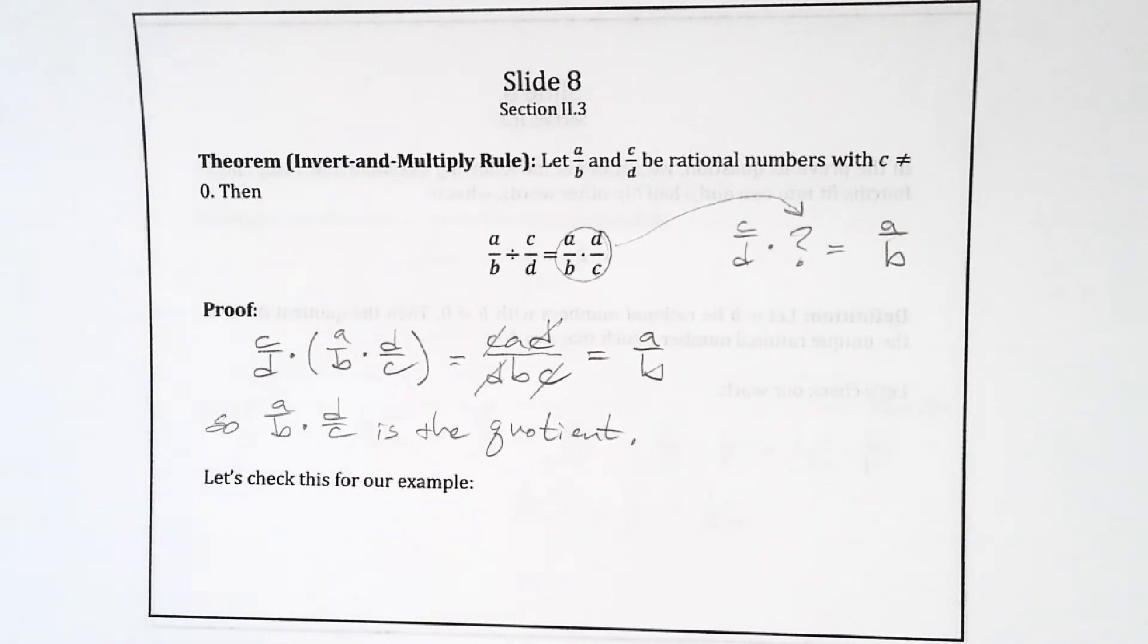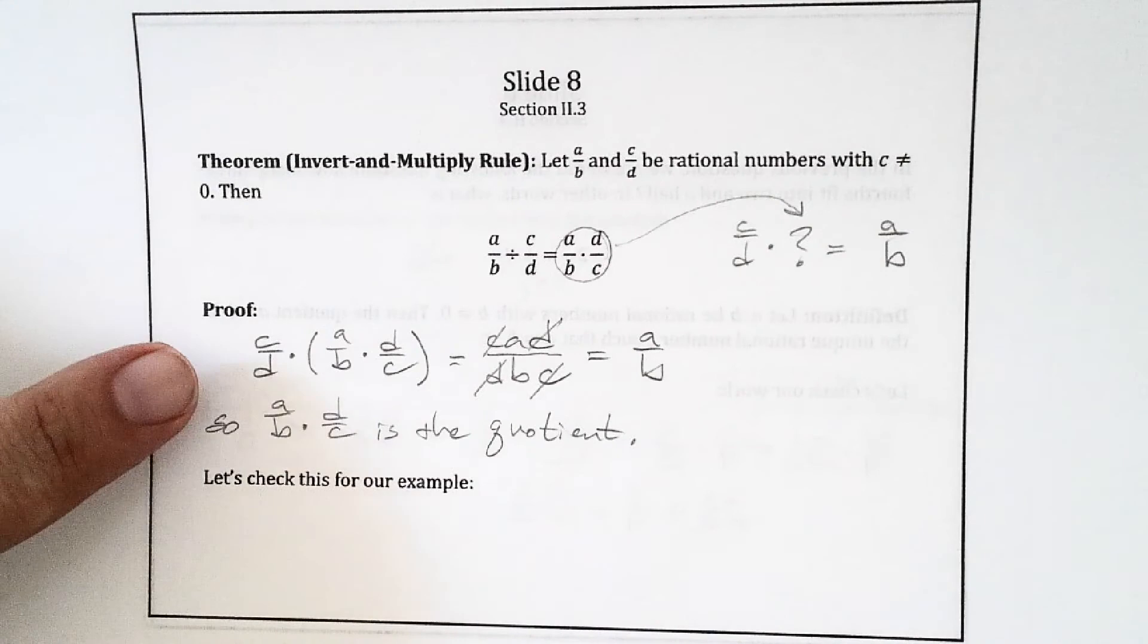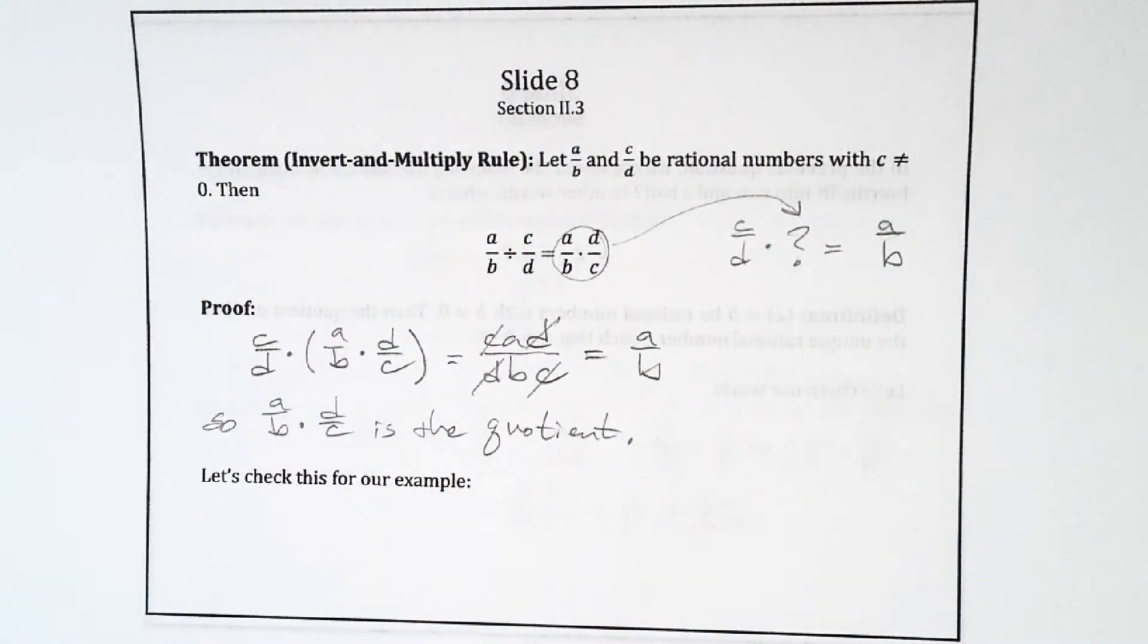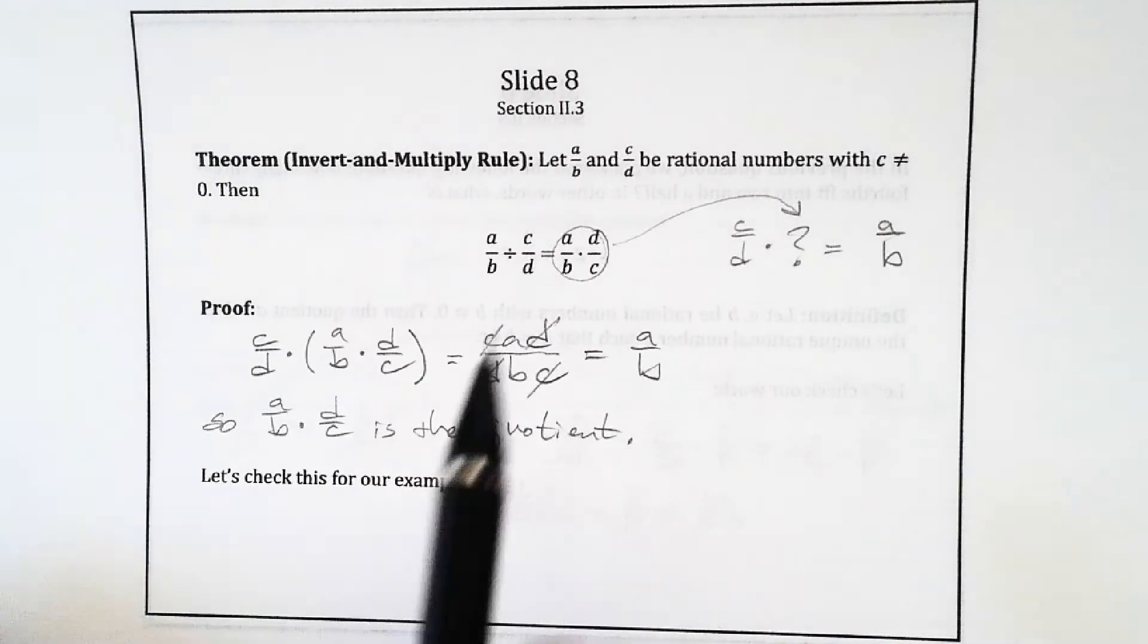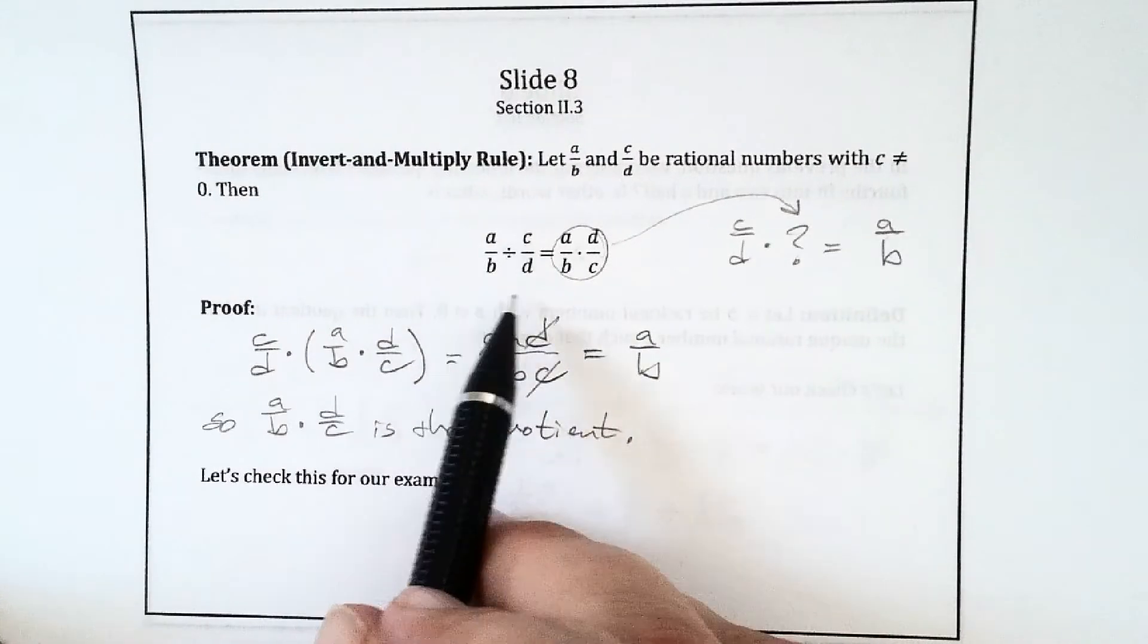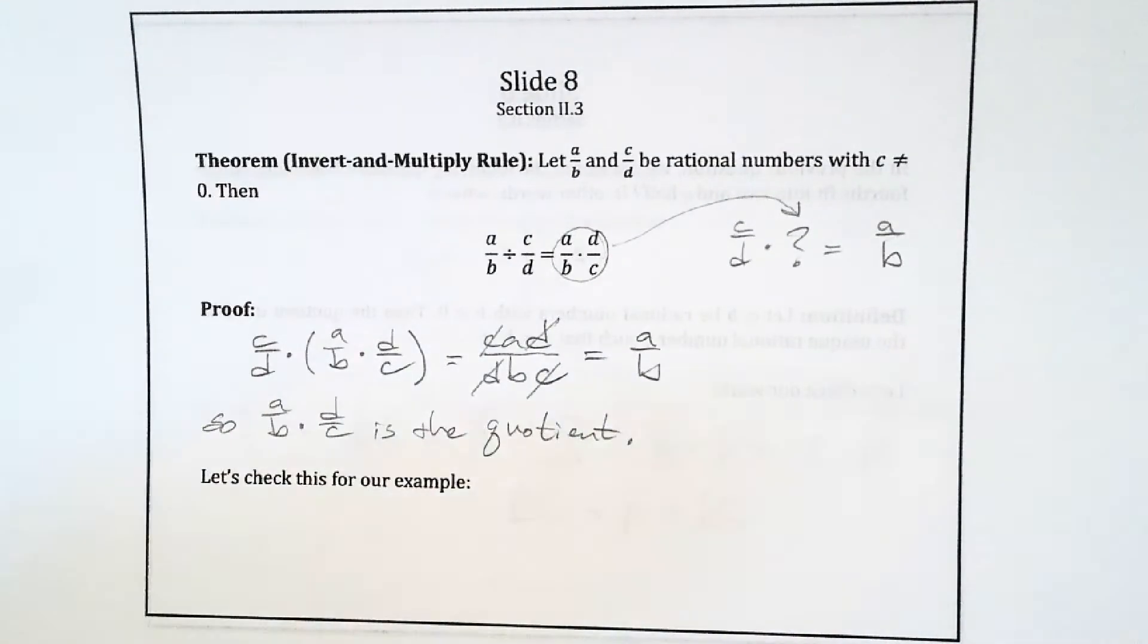So I write all that out because sometimes students get mixed up about which thing to invert, probably because they've just memorized the rule. So I think it's helpful to have this in the back of your mind. That way, if you happen to forget, you can sort of reproduce the reasoning and know, oh yeah, I don't want to invert the first number. I want to invert the second one.